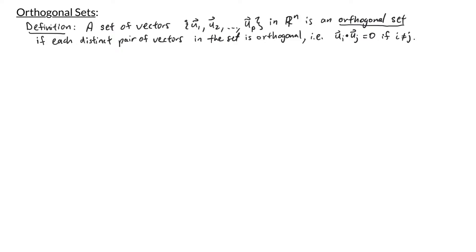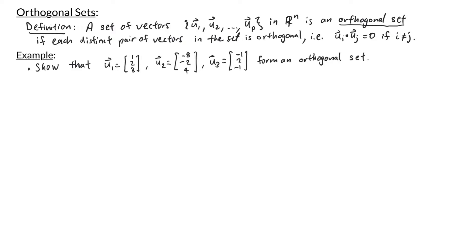Let's take a look at a quick example of an orthogonal set. We want to show that u1 = (1, 2, 3), u2 = (-8, -2, 4), and u3 = (-1, 2, -1) form an orthogonal set. To confirm this, we take the dot product between any two pairs of these vectors and check that it's equal to zero. u1 dot u2 = (1)(-8) + (2)(-2) + (3)(4) = -8 - 4 + 12 = 0.